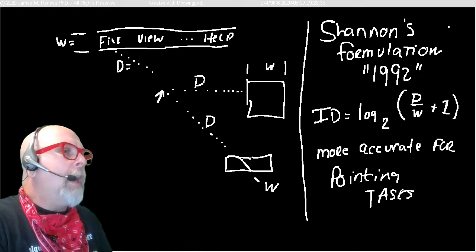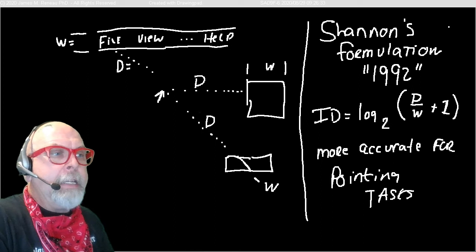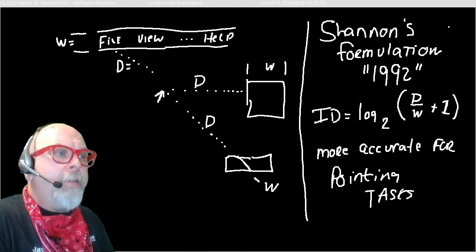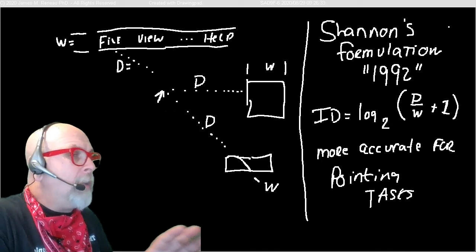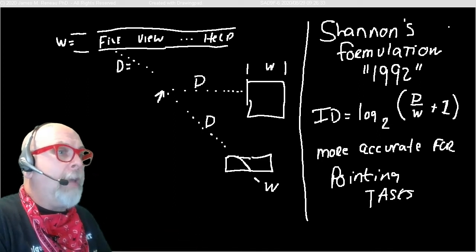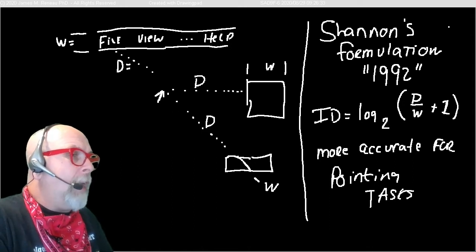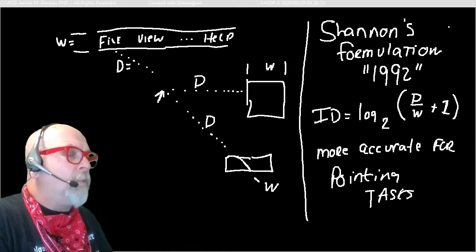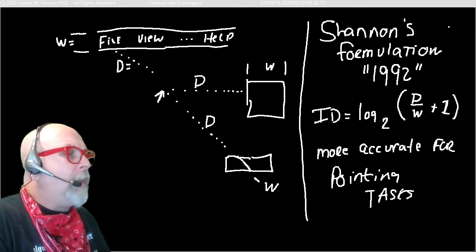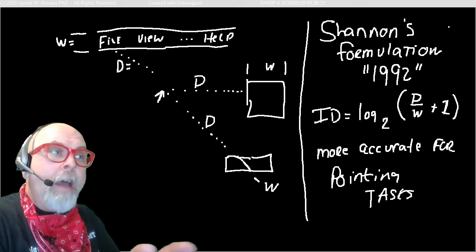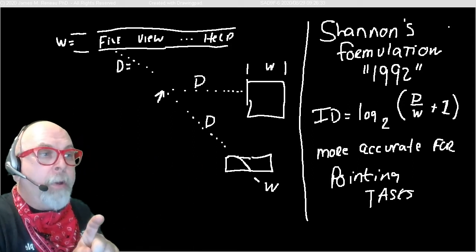There was some research done back in the late 1980s and early 1990s. And one of the things that came out of that research in dealing with computer interaction and interactions with screens and mouses and pointers was that Fitz's Law was reformulated and the formulation was known as Shannon's formulation. Shannon's formulation states that the index of difficulty for pointing tasks, not picking up tasks, but pointing tasks. I want to point at this. I want to point at this. I want to point at that.